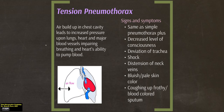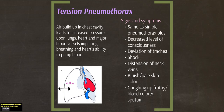In tension pneumothorax, this is a much more serious condition. There is a break in the lung area that allows air flow into the lung region. The air buildup in the chest cavity leads to increased pressure upon the lungs, the heart, and the major blood vessels, which impairs breathing and the heart's ability to pump blood. Additional signs and symptoms include decreased level of consciousness, deviation of the trachea, shock, distension of the neck veins, bluish pale skin color, and coughing up frothy blood-colored sputum.